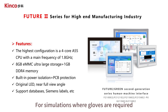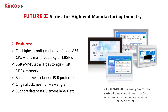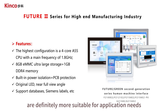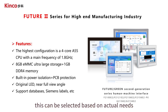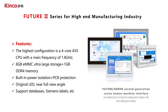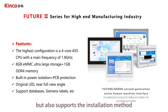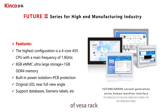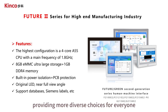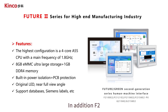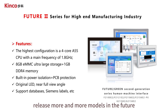For situations where gloves are required for operation, resistance screens are definitely more suitable. This can be selected based on actual needs. Another option for the 15.6-inch large screen is that it not only supports traditional snap-on installation but also supports the weather rack installation method, providing more diverse choices. F2 and G2 will continue to release more models in the future, so you can look forward to that.